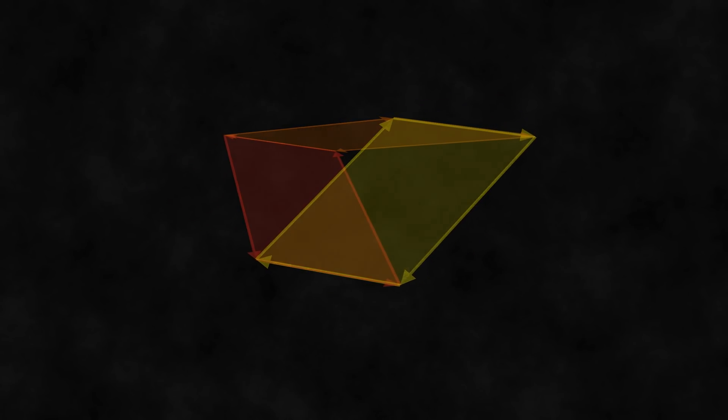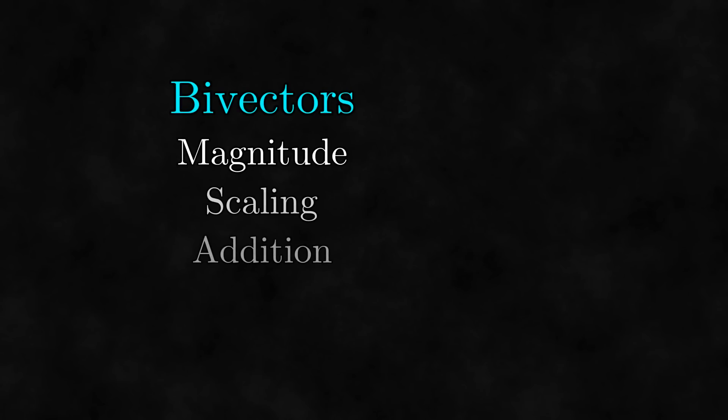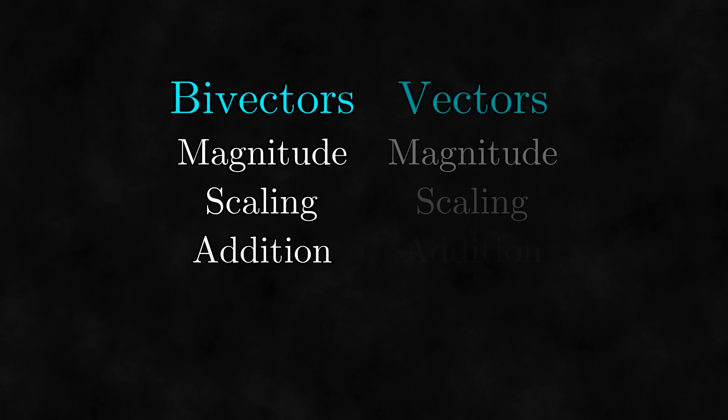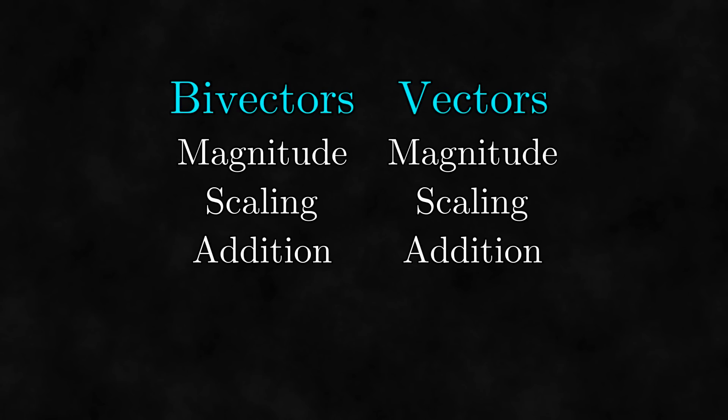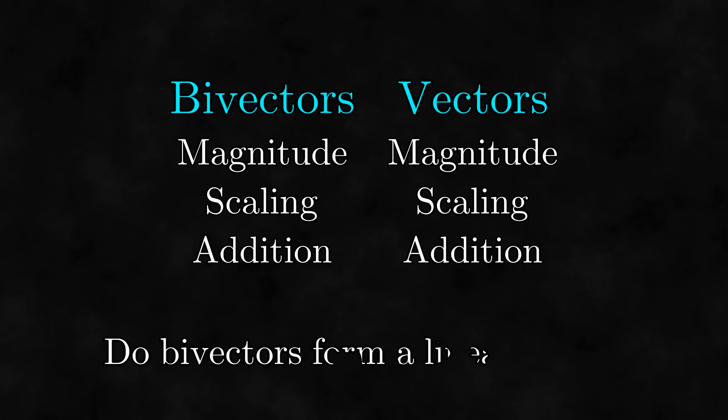At this point, you may have noticed that the operations defined for bivectors in this video are the same operations we have for vectors. This leads to a natural question: do bivectors form a linear space? We will answer that question in the next video.